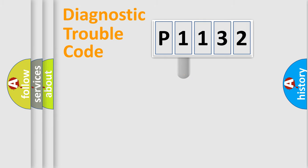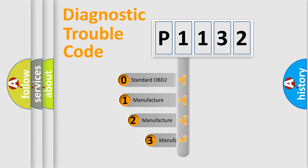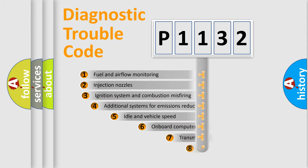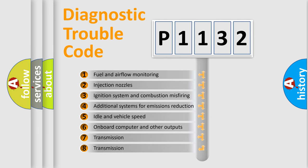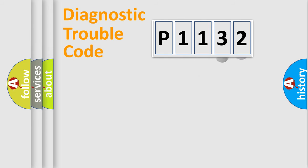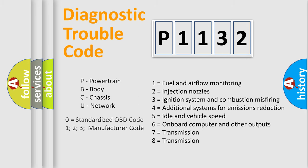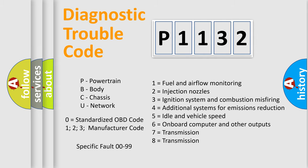This distribution is defined in the first character of the code. If the second character is expressed as zero, it is a standardized error. In the case of numbers 1, 2, or 3, it is a manufacturer-specific error. The third character specifies a subset of errors. The last two characters define the specific fault of the group. This division is valid only if the second character code is expressed by the number zero.